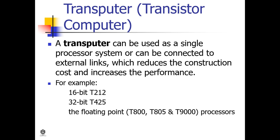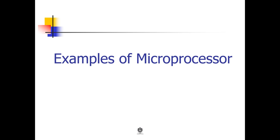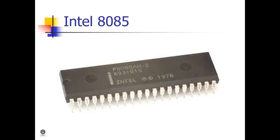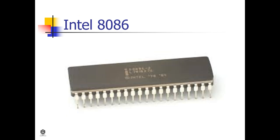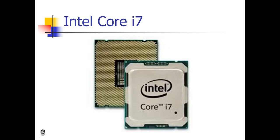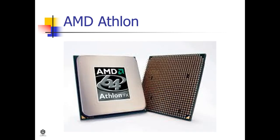That's all for the introduction to microprocessors. Here are some examples of microprocessors: Intel 4004 (the first microprocessor), Intel 8085, Intel 8086, Intel Pentium 4, Intel Core i7, and AMD Athlon.